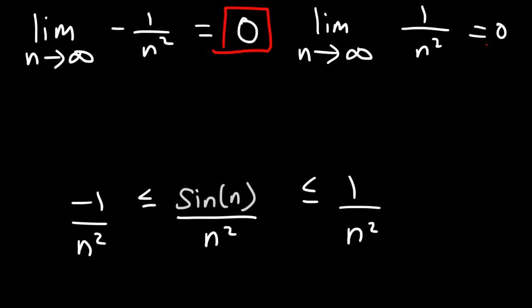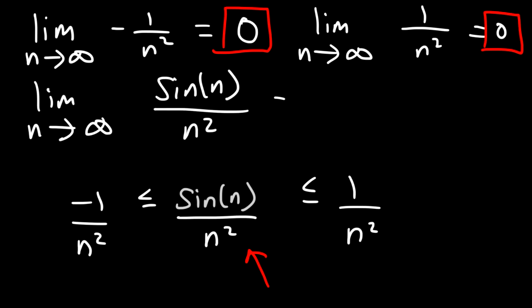So because these two limits equal the same value, then for the function in the middle we should also get the same value as well. So the limit as n approaches infinity for the sequence sine n over n squared must also be 0 based on the squeeze theorem.